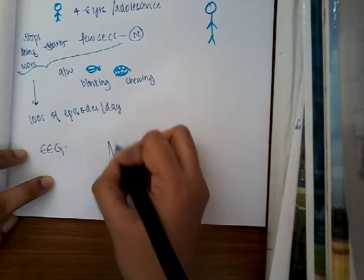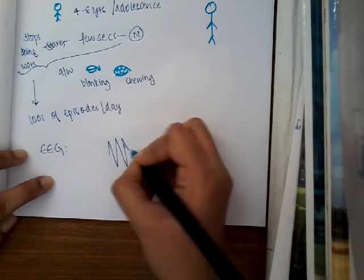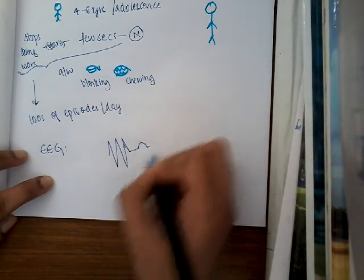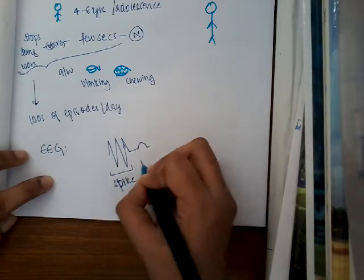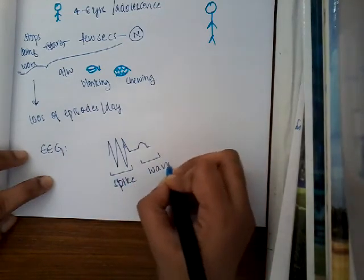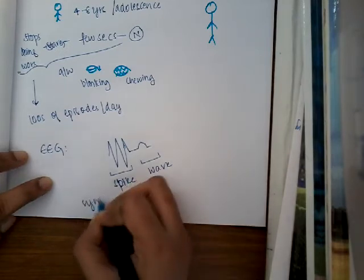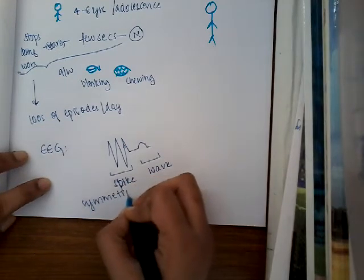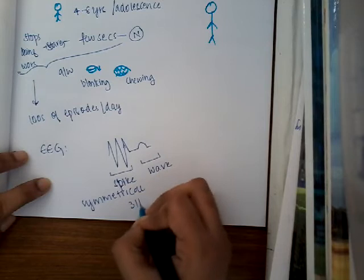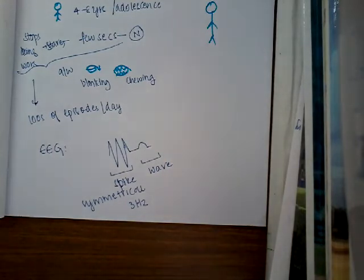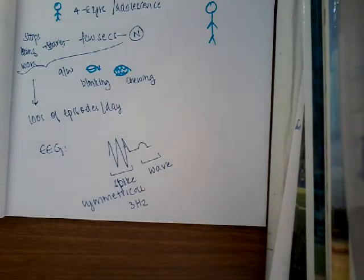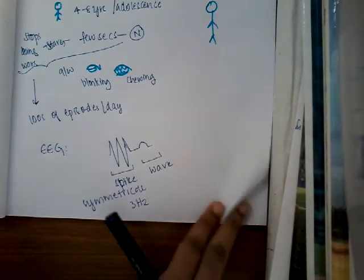In EEG, we see a spike. This is the spike pattern and a wave pattern. Okay, we see a spike pattern and a wave pattern. And this will be symmetrical. The spike and wave pattern will be symmetrical and it has three hertz frequency. So this is what we see in EEG episode. And then, so this is about the typical absence seizures.